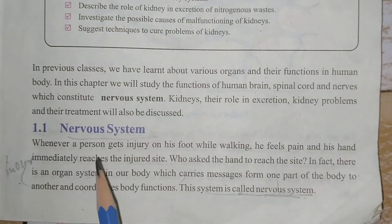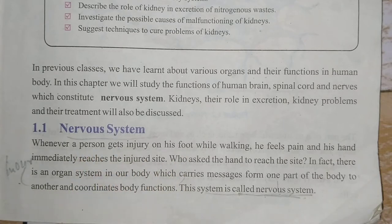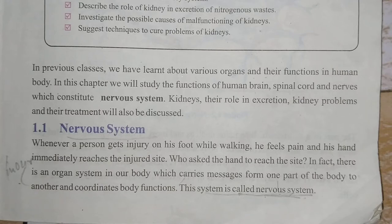So students, first of all we will discuss the nervous system. What is a nervous system? There is an organ system in our body which carries messages from one part of the body to another and coordinates body functions. This system is called the nervous system. It leads the body's messages from one part to the other and coordinates — meaning it controls — all body functions. We call this the nervous system. Move to page number 2.